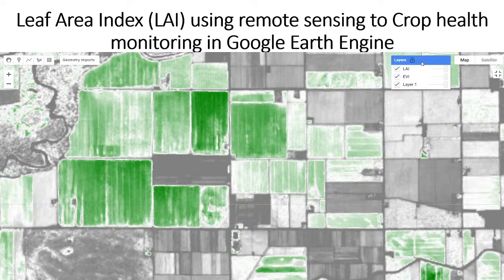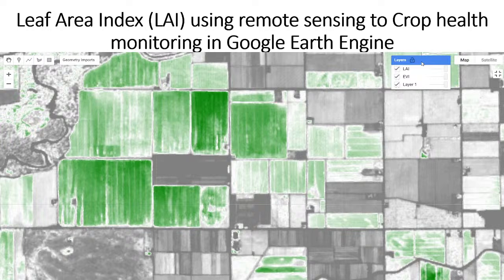Hello everyone, welcome to the Study Hacks Institute of GIS and Remote Sensing. Today I will discuss a very important topic — mainly Leaf Area Index — and how we can easily use remote sensing for crop health monitoring in the Google Earth Engine platform. I will try to discuss all of these things one by one, so let's go.